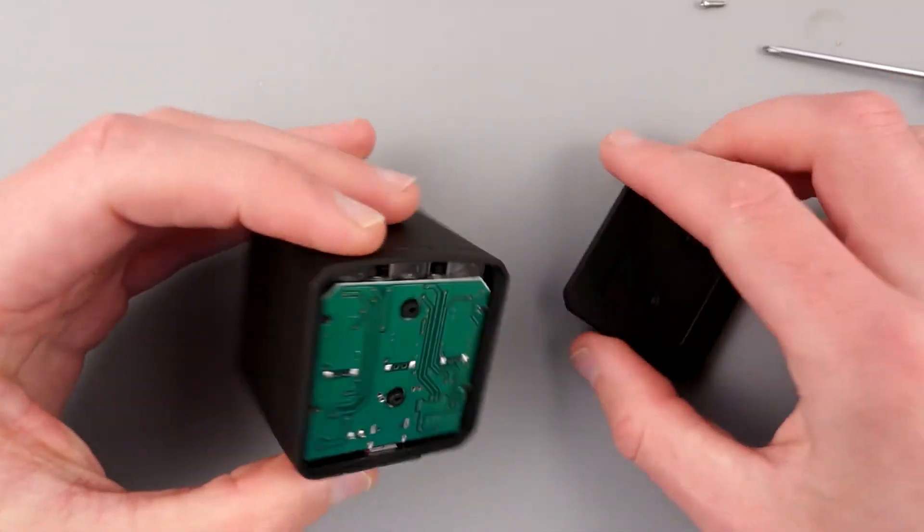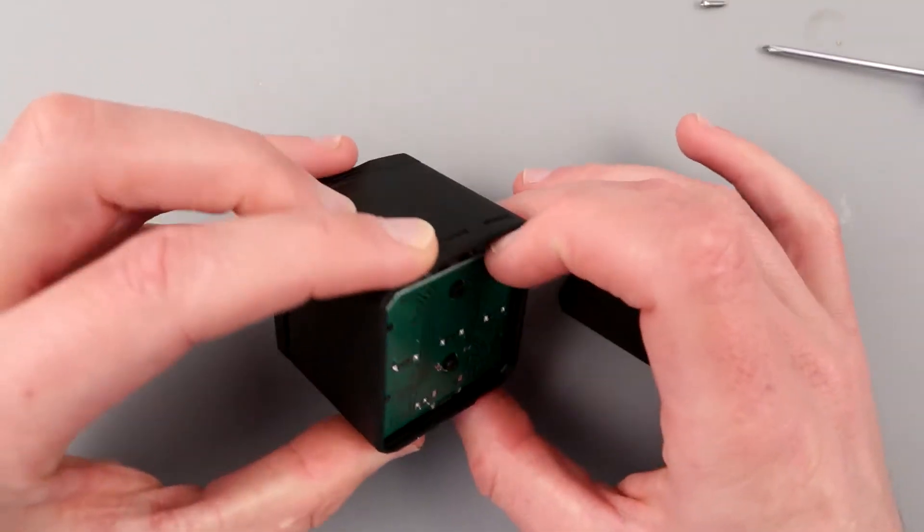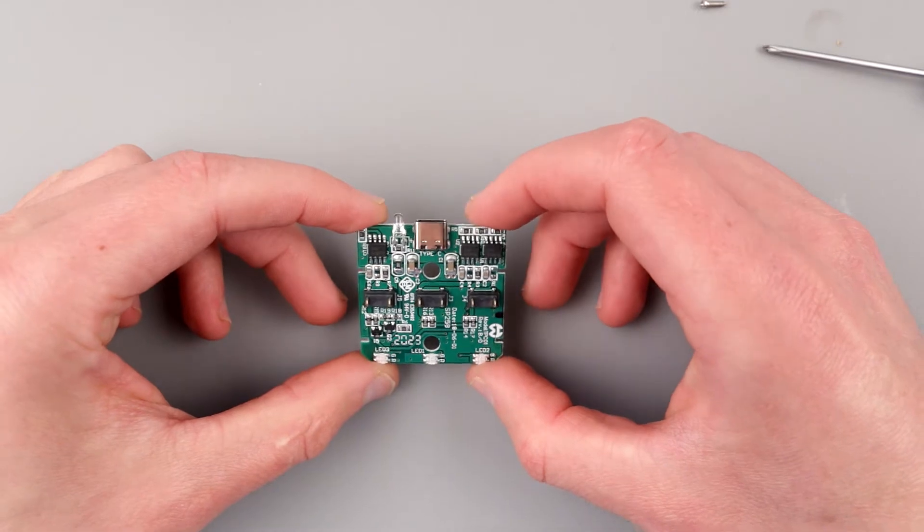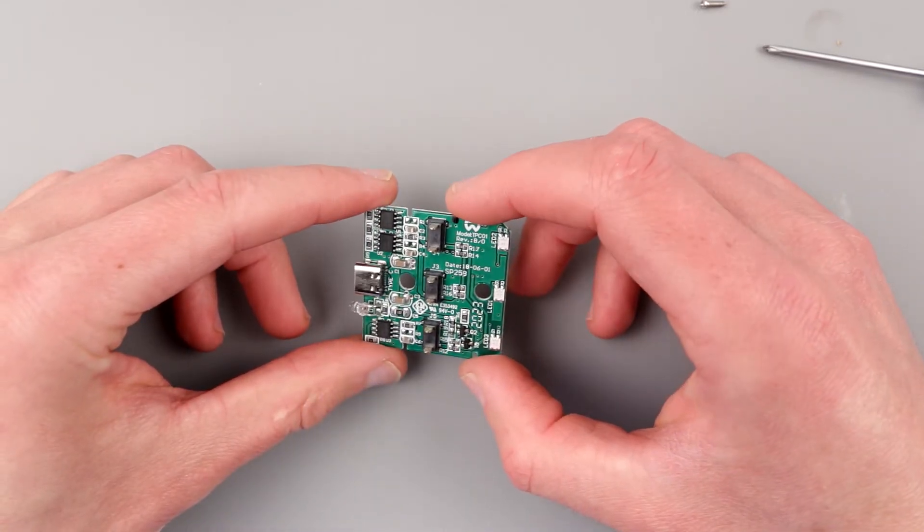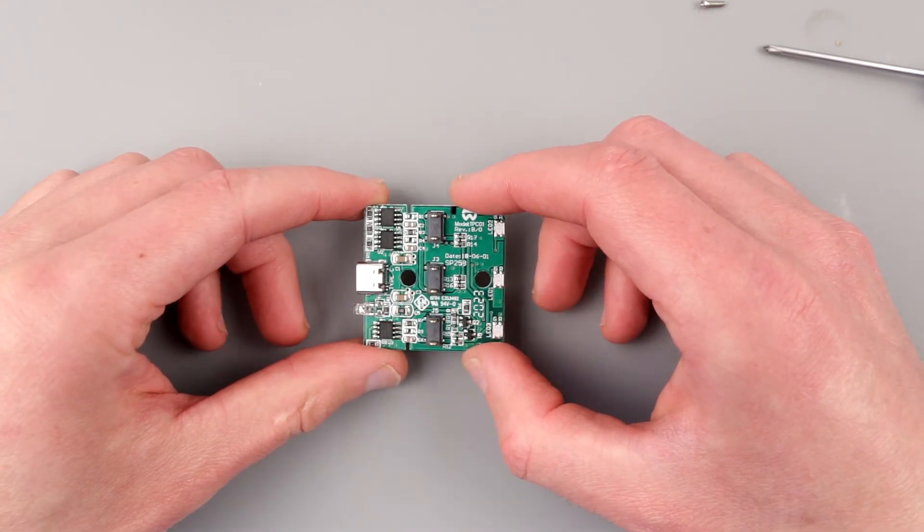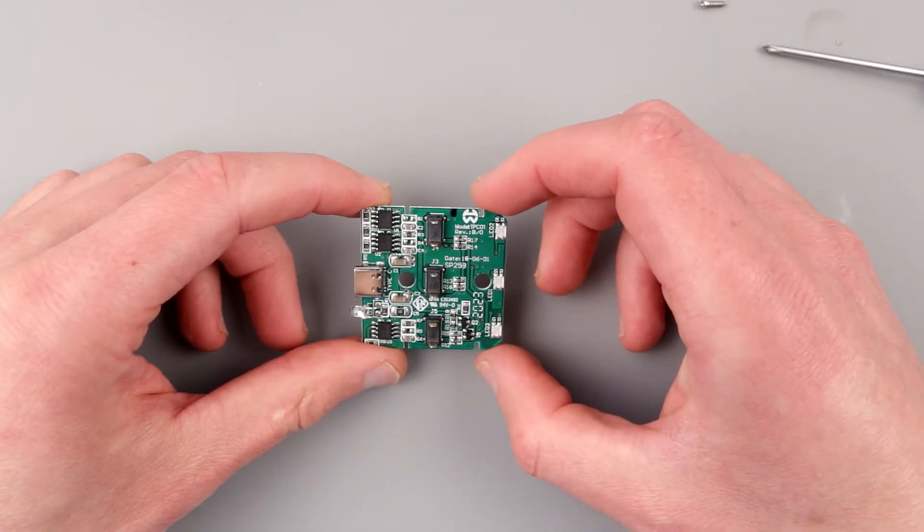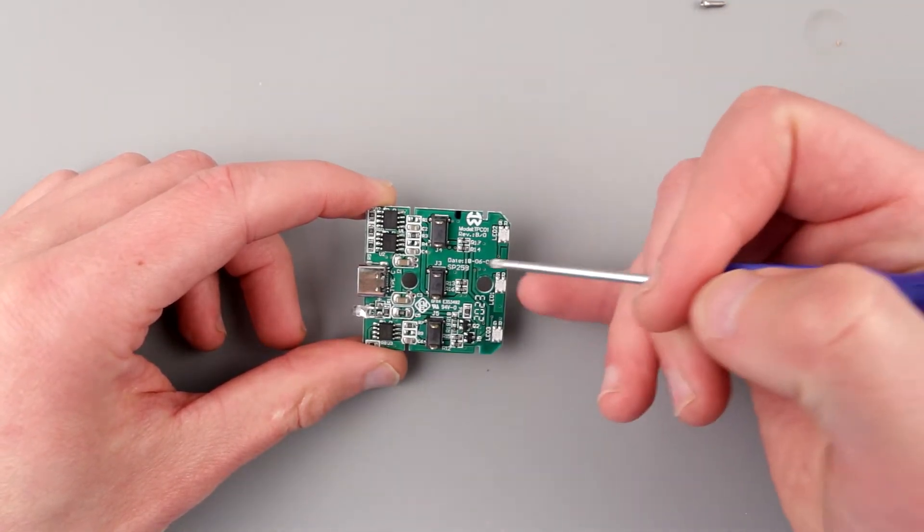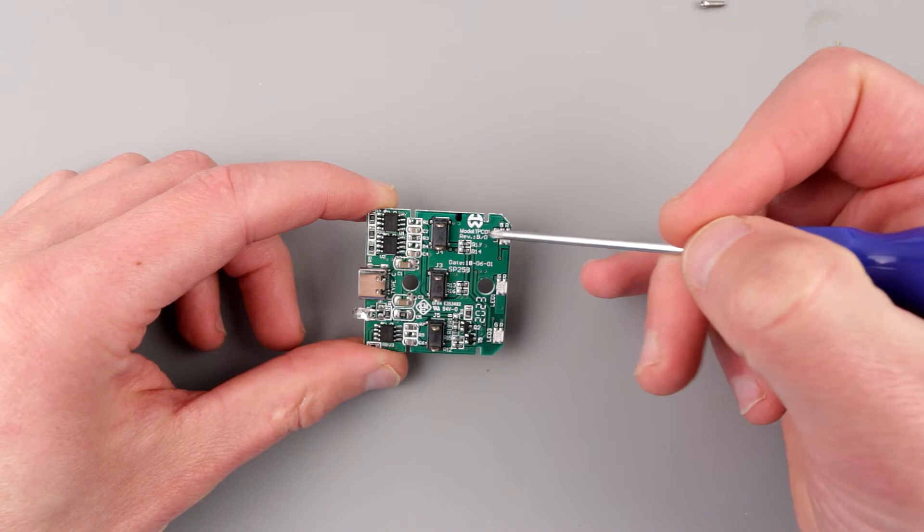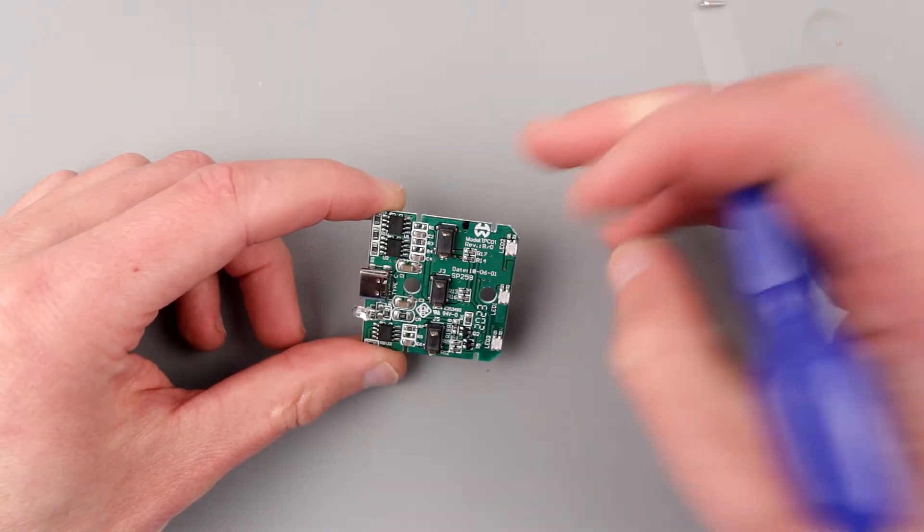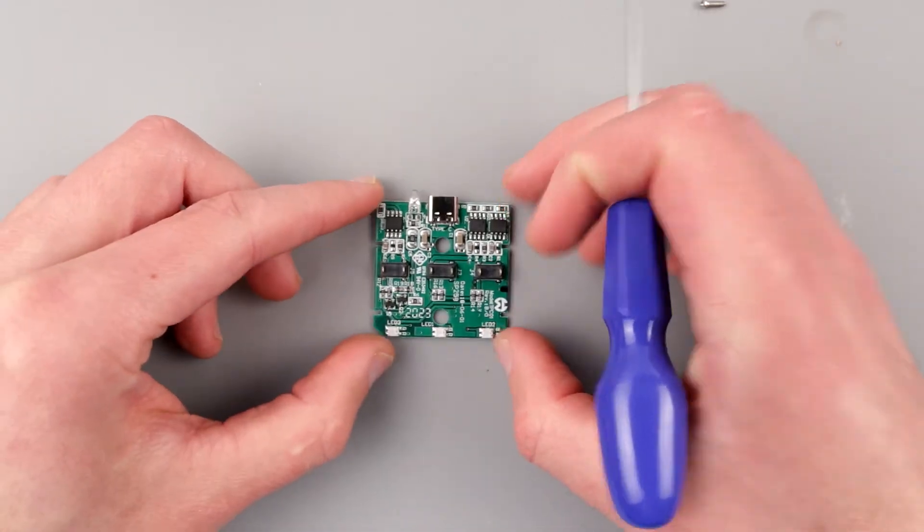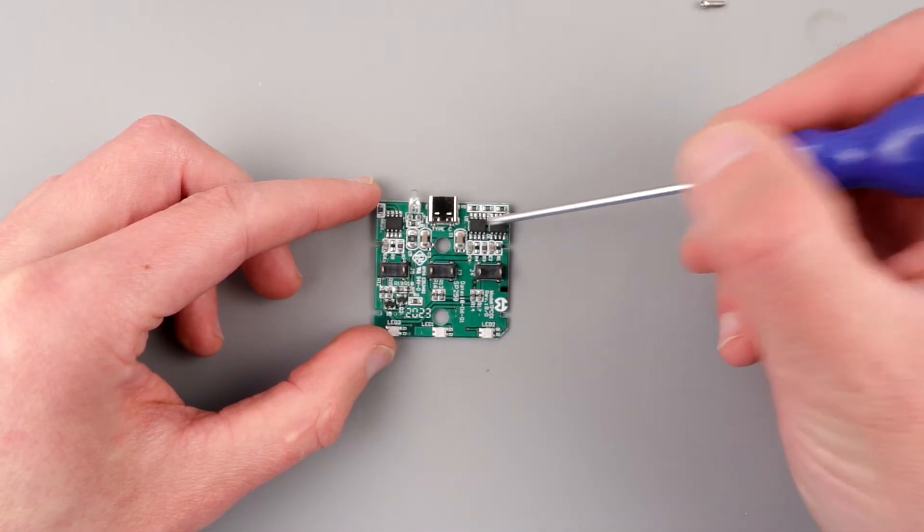Oh wow, it's already surprising. I don't think we have much going on here. Production date is 18-06-01, I guess 2018, not 2001. Model TPC-01 revision B0. We have three LEDs, two color red and green. Here are terminals, and we have three chips and that's it, and USB-C charger port for charging.